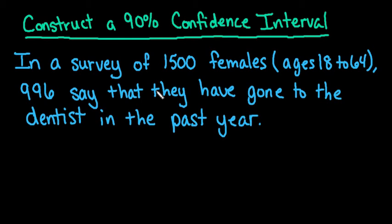Hi, for this video I want to show you how to construct a 90% confidence interval using the TI-84 graphing calculator. What we have here is in a survey of 1,500 females ages 18 to 64, 996 say that they have gone to the dentist in the past year.